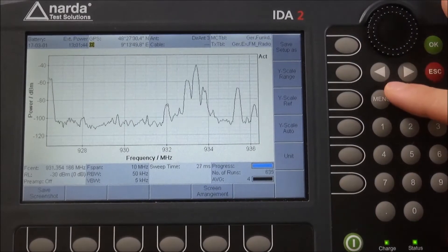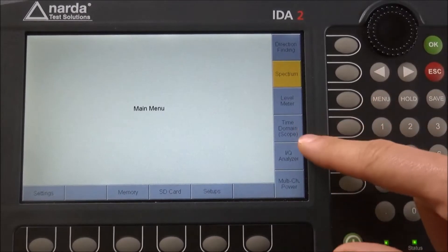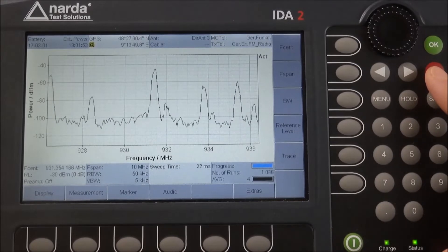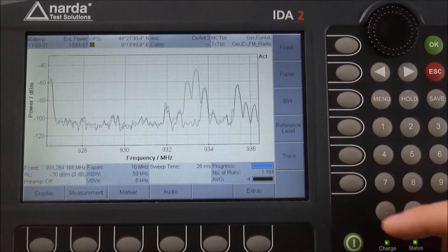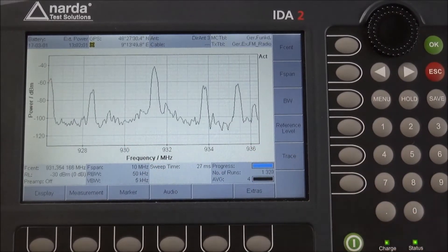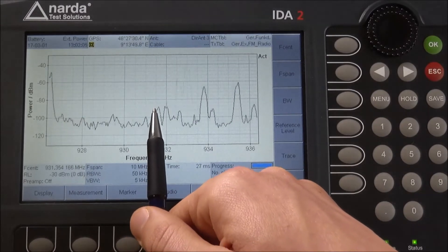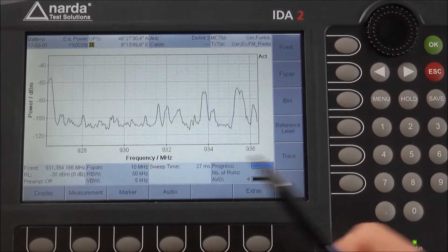This video is dealing with the IDA's time domain or scope mode. I want to start in the spectrum where we are currently looking at some GSM signals. We have a traffic channel where we have tuned in that is sporadically active. I have already adjusted the center frequency.